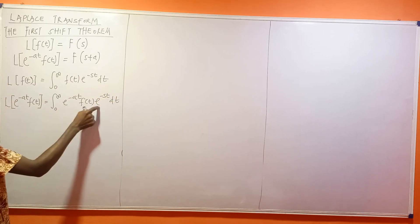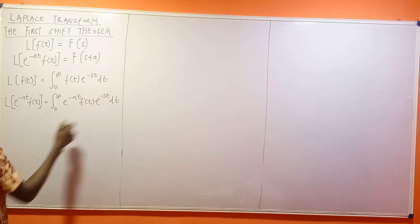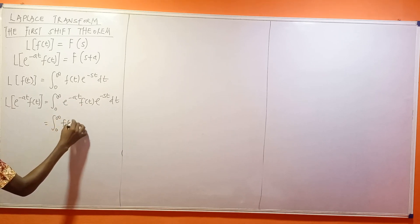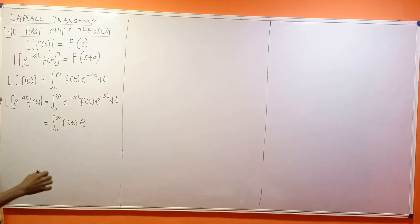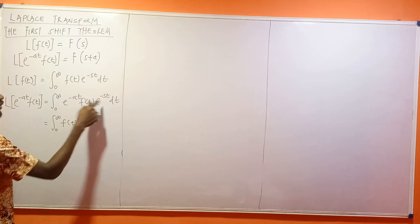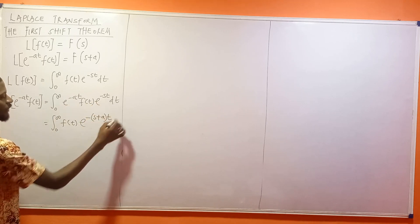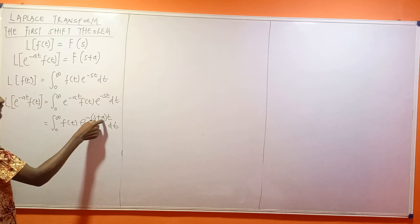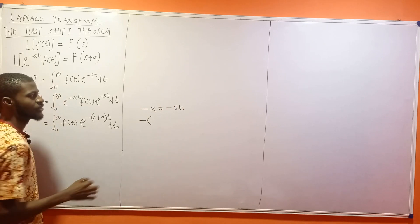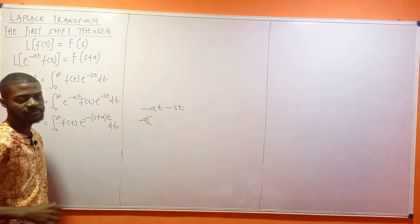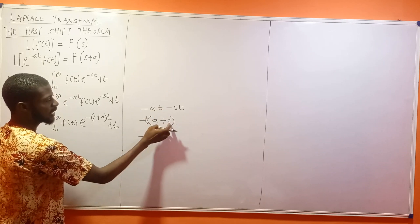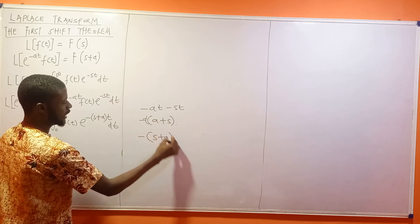Looking at this, we have this exponential and this exponential — their powers are minus at minus st. So this is the integral from 0 to infinity, with f(t) kept separately. Now, this exponential — minus is here, minus is here. So this is minus bracket, and I'm going to have s plus a to the power of t dt. You have minus at minus st — bring out the minus sign. What remains is a plus s, because minus minus gives you plus. So this becomes minus(s plus a)t.